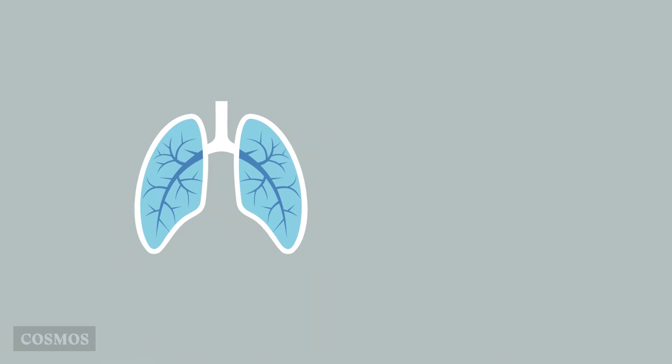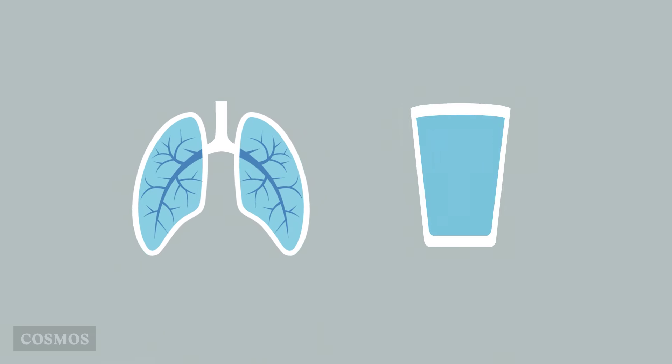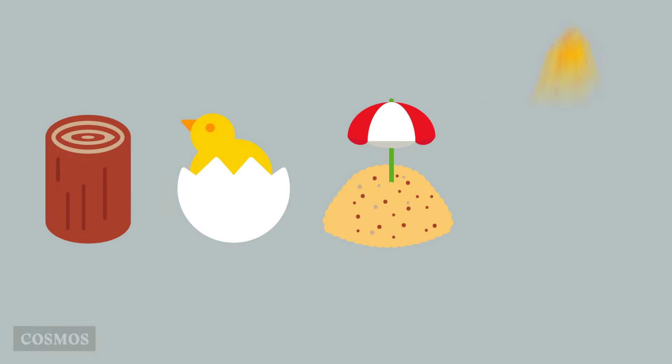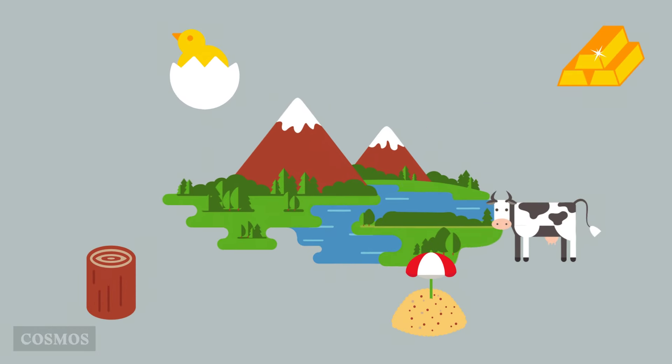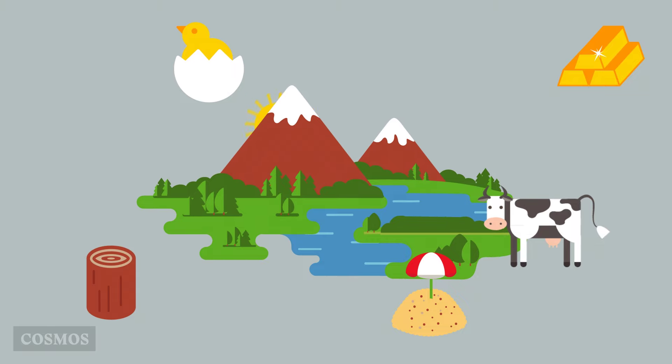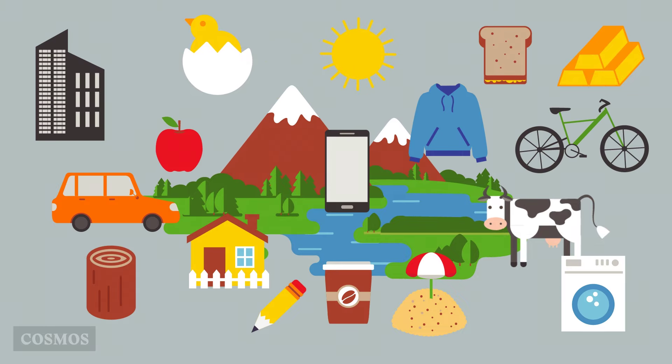Examples include the air we breathe, the water we drink, as well as wood, chickens, sand and gold. When you start thinking about it, we depend on natural resources for nearly everything.